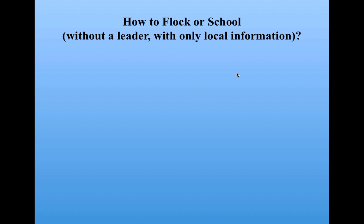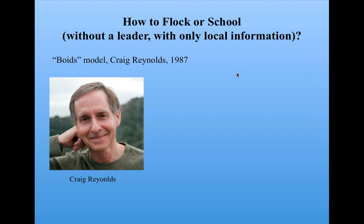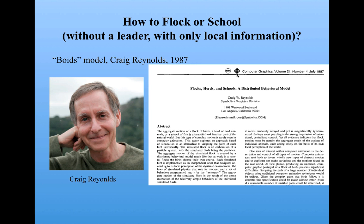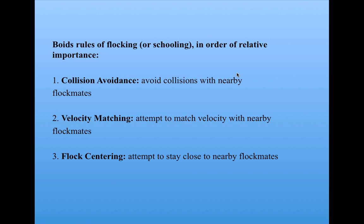Now we can turn to the how question. How is it that these flocks or schools can come to be without any leader, where each individual only has a small amount of local information? In the 1980s, a computer graphics person named Craig Reynolds presented a very simple model of this phenomenon called the Boids model. His goal was to develop realistic computer graphics of flocking or schooling behavior. He wrote a famous paper called 'Flocks, Herds, and Schools: A Distributed Behavioral Model.' In it, he gives a simple model where individuals obey three rules in order of relative importance: collision avoidance — avoid collisions with nearby flock mates; velocity matching — attempt to match velocity with nearby flock mates.